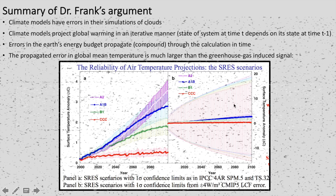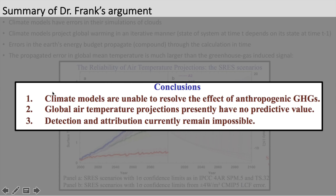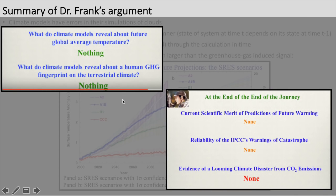That is used to make conclusions from his AGU poster: one, climate models are unable to resolve the effects of anthropogenic greenhouse gases; two, global air temperature projections presently have no predictive value; and three, detection and attribution currently remain impossible, meaning we can't know what caused various temperature trends in the past. In his talk at the Doctors for Disaster Preparedness meeting, Dr. Frank goes even further, concluding there's nothing that climate models reveal about future global warming.